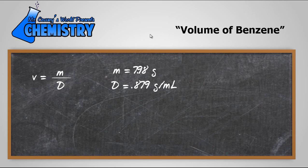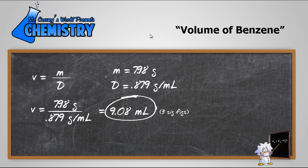And then the density will be 0.879 grams per milliliter or cubic centimeter. Let's substitute our values into the equation and then just plug and chug it into our calculators and 9.08 milliliters or cubic centimeters. And of course we're going to pay attention to three sig figs.